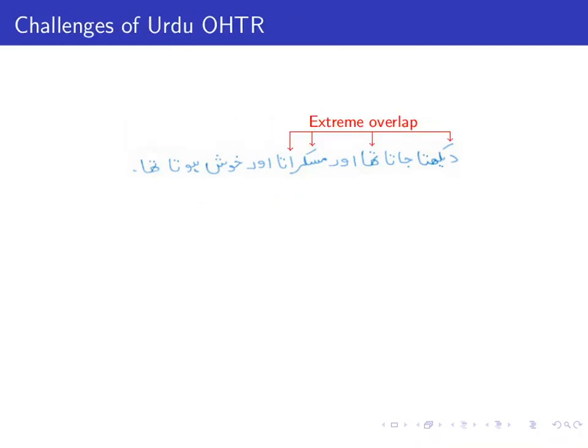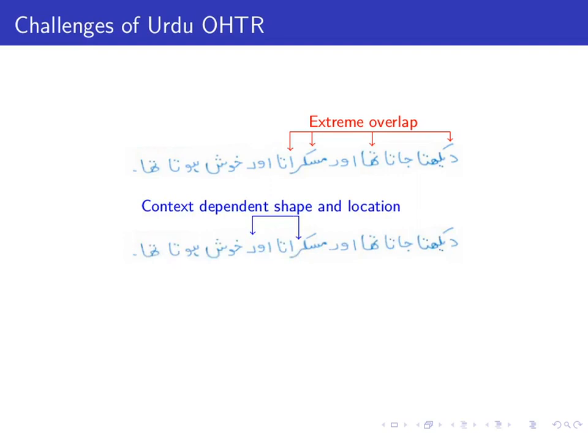What are some of the main challenges in handwritten Urdu? One challenge is that cursive Urdu can have extreme overlap among characters. Sometimes parts of a letter can overlap multiple other letters or even other words. In some cases, letters can lie exactly on top of other letters. Another challenge is context-dependent shape and location of letters. Placement of characters is not just in right-to-left order; there is a slight two-dimensional structure to Urdu as well.